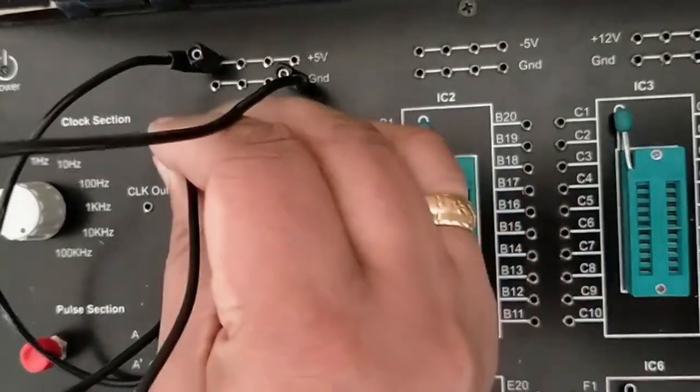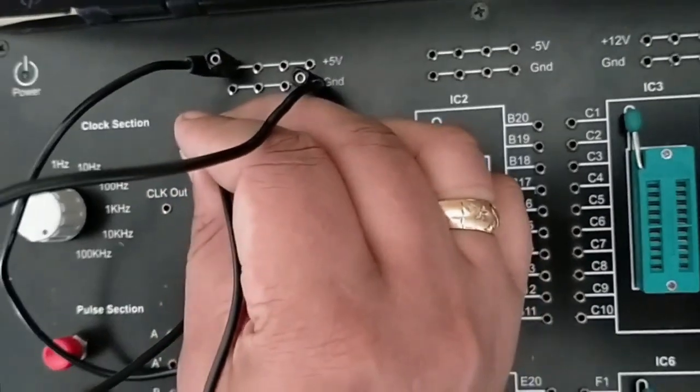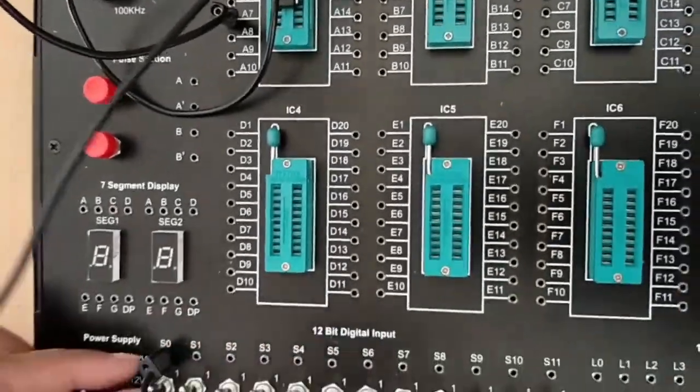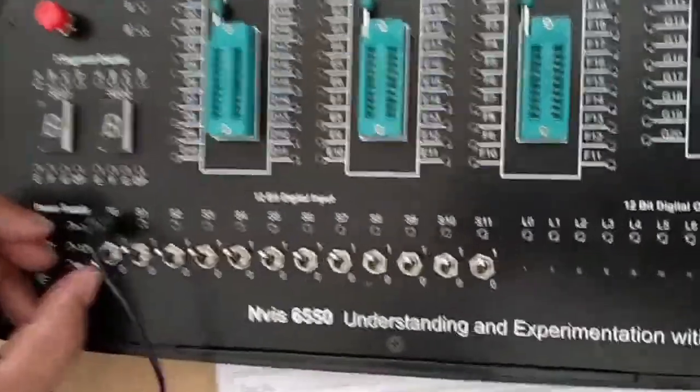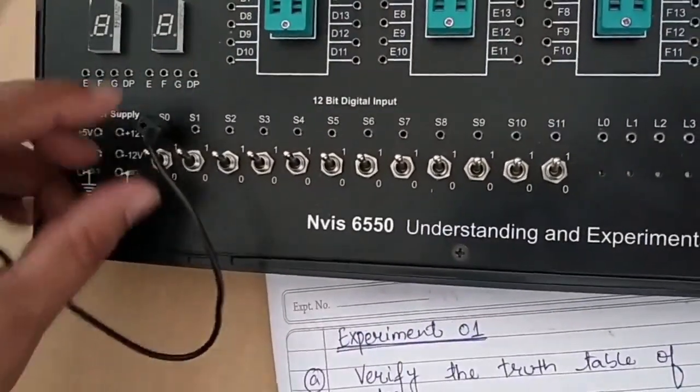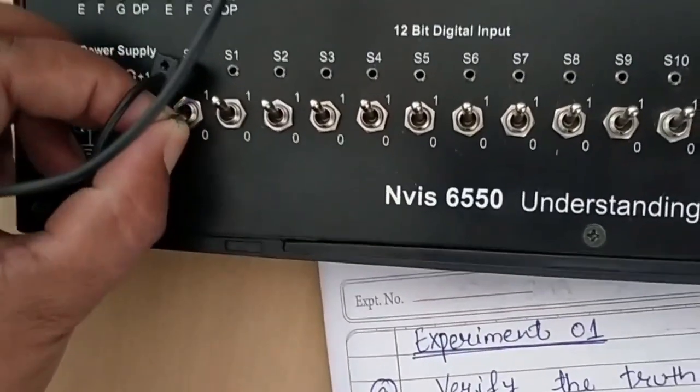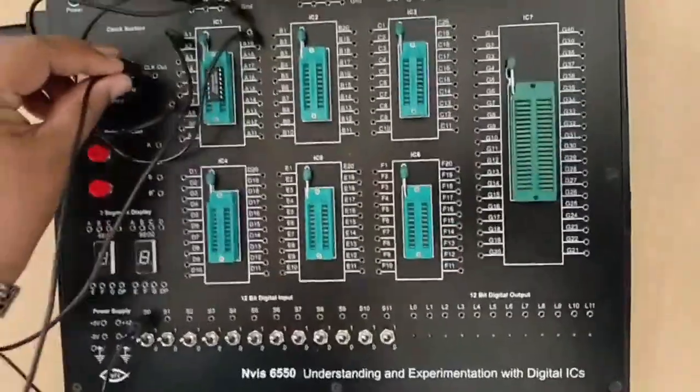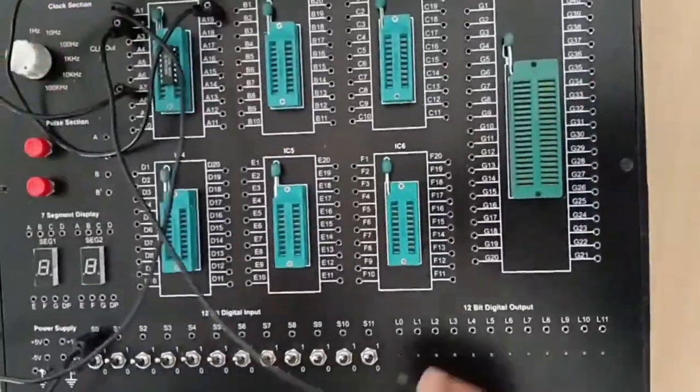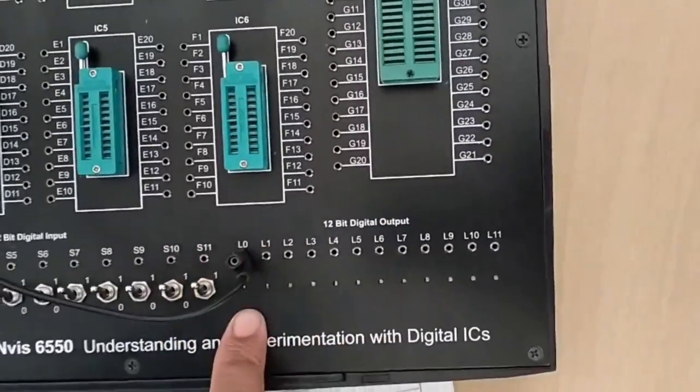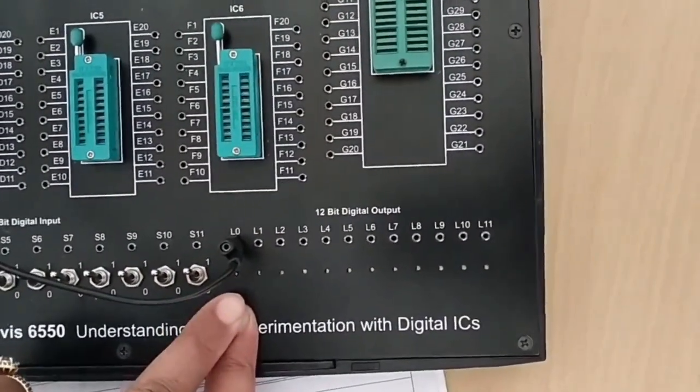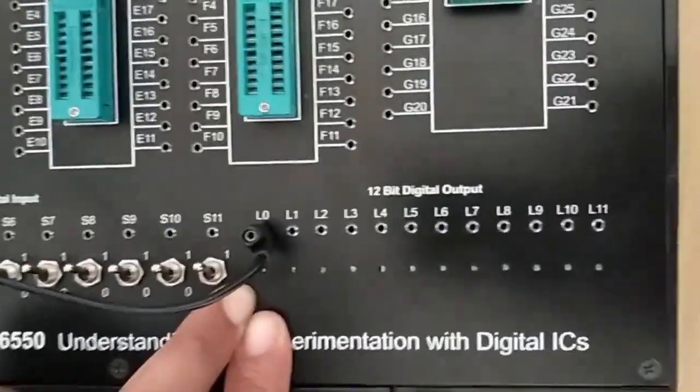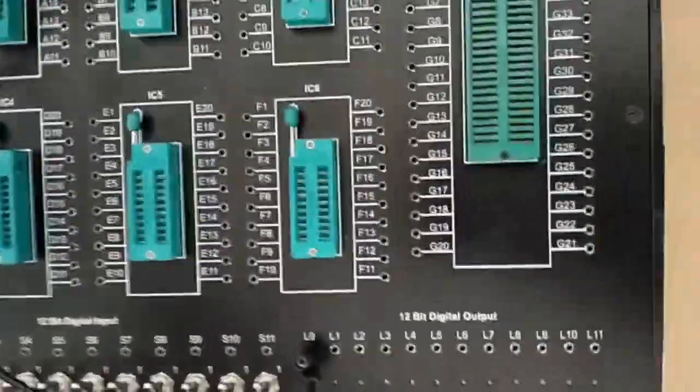After that, we will give input to any NOT gate - I am using the first one. I will give input through this toggle switch which can provide us two logic levels: logic 1 and logic 0. The output from pin number 2 we will observe on these LEDs. If the LED glows, that is considered as logic 1. If the LED is off, that will be considered as logic 0. Now we will check the truth table for this particular IC.